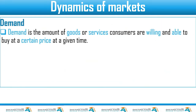Demand is the amount of goods and services consumers are willing and able to buy. Willingness simply means you want the good, but willingness alone is not enough — you must also be able to acquire it. Ability means you can afford the product. So you are not going to demand a good that you can afford but don't want, and you're not going to demand one you want but can't afford. Both must be present.